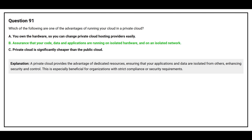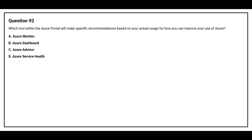Question number 92: Which tool within the Azure portal will make specific recommendations based on your actual usage for how you can improve your use of Azure software? Option A: Azure Monitor. Option B: Azure Dashboard. Option C: Azure Advisor. Option D: Azure Service Health.